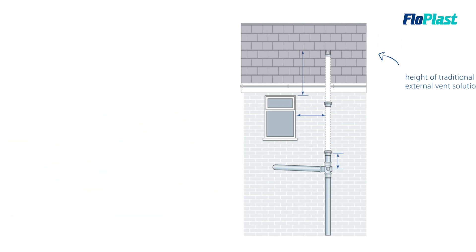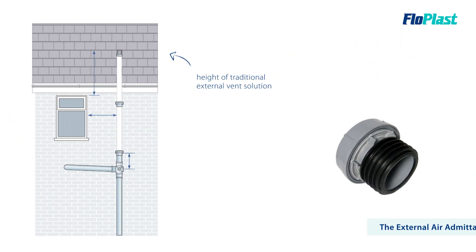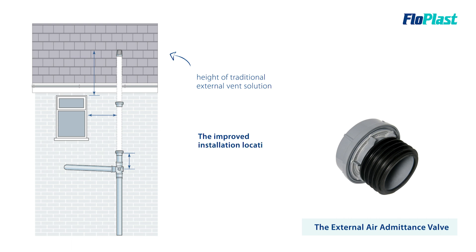The final product to consider is the external air admittance valve. Designed specifically for when there is no suitable internal location, Flowplast have developed this external variant. It allows the installation of an external soil pipe within 3 metres of any opening, terminating at the same height as if installed internally — which in the UK is a minimum of just 200mm above the highest wet entry point to the soil vent pipe.